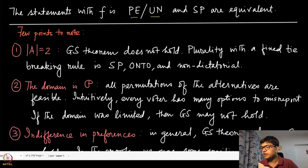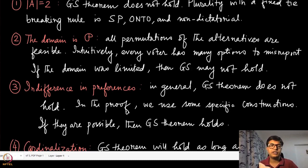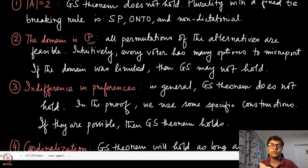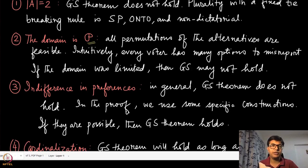The second observation is that the domain of this social choice function is the entire set of all possible strict preferences. Script P essentially denotes the permutation of all possible alternatives. If you have m alternatives, script P lists all possible m-factorial permutations of these alternatives which can potentially be the preferences of these agents.